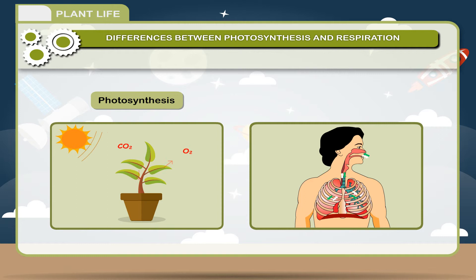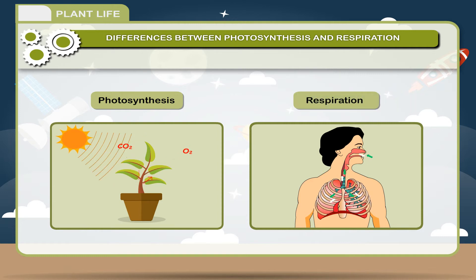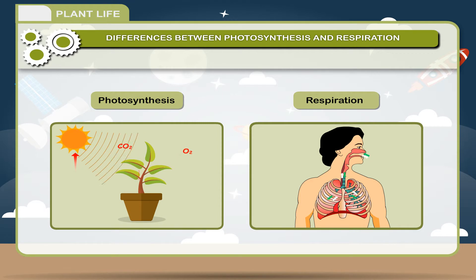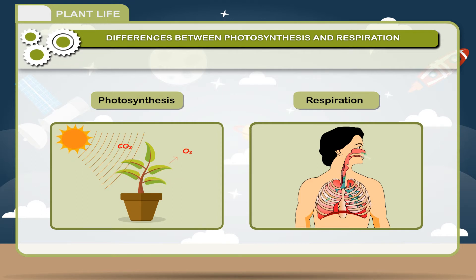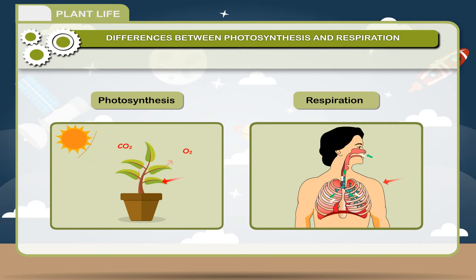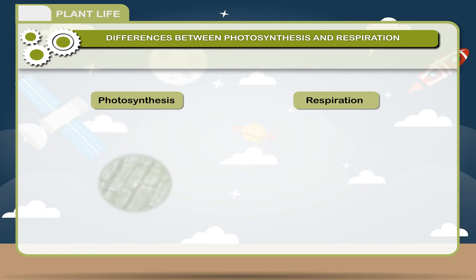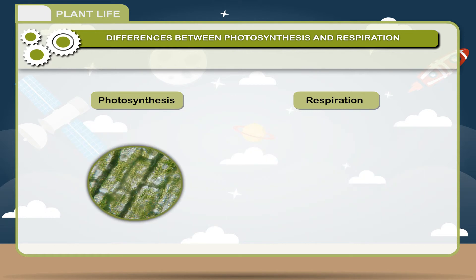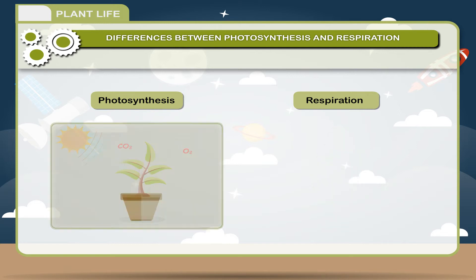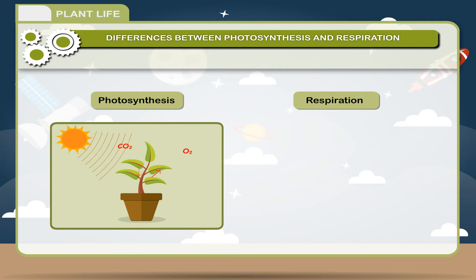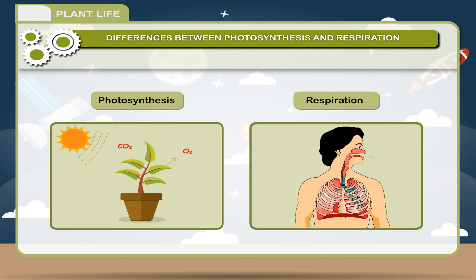Photosynthesis takes place in sunlight and only in plants, in the daytime. Respiration occurs throughout life, both in plants and animals. Photosynthesis occurs only in cells containing chlorophyll, while respiration occurs in every cell. In photosynthesis, food is prepared; in respiration, food is broken down.